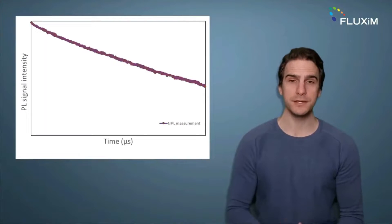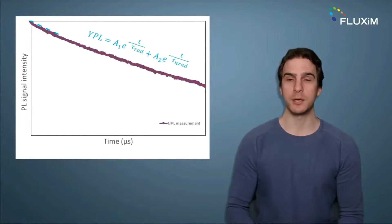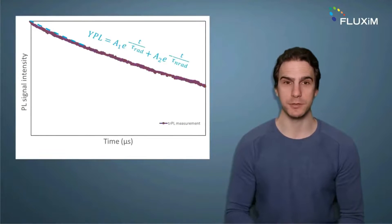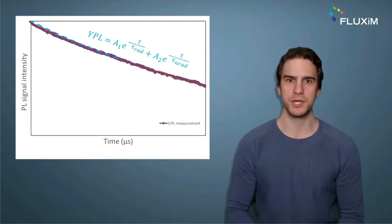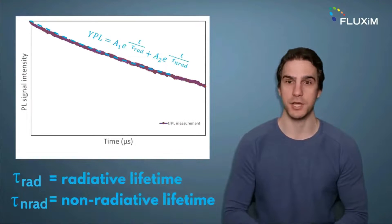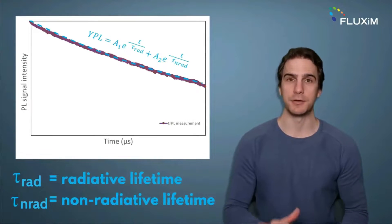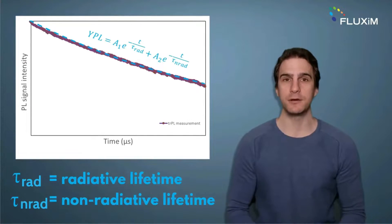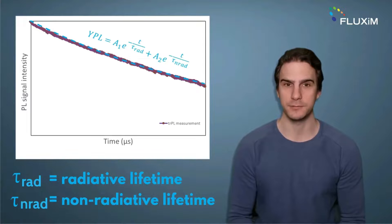To extract information, you can fit the TRPL decay with a bi-exponential equation, which gives you two lifetime values for the charge carriers: the radiative and the non-radiative lifetimes.